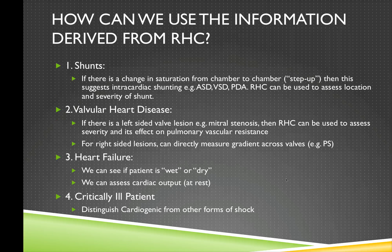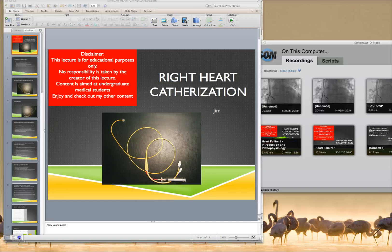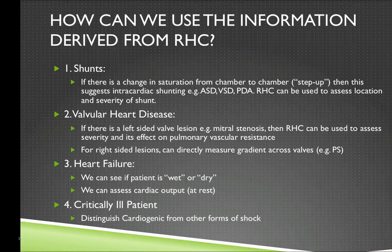So how can we use this information in patients with cardiac disease? The classic example is detecting a shunt. If there's a hole in the heart, blood can leak from one chamber to another — for example an atrial septal defect between the atria, a ventricular septal defect between the ventricles, or a patent ductus arteriosus between the pulmonary artery and the aorta. By measuring oxygen saturation between the different chambers it's possible to estimate the location and degree of the shunt. This is very important in evaluating patients with congenital heart disease.